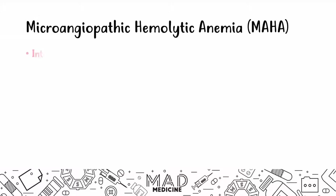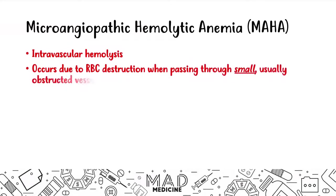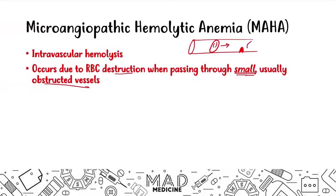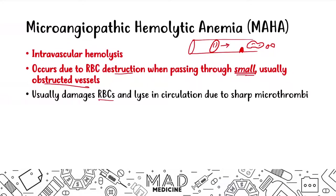Microangiopathic hemolytic anemia is an intravascular hemolysis — it's happening within the blood vessels themselves, not in the spleen. It occurs due to red blood cells being destroyed when they pass through small and usually obstructed vessels. If a red blood cell passes through a small vessel and something is obstructing flow, that red blood cell gets lysed and destroyed. The damage leads to the red blood cell lysing in circulation due to sharp microthrombi.